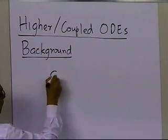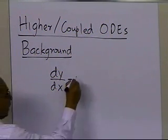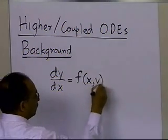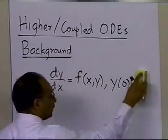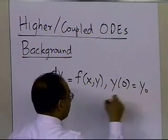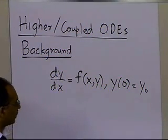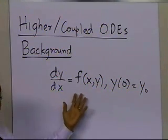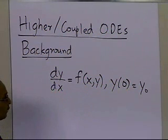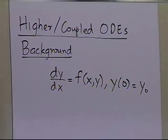All the methods we have talked about — Euler's method, Runge-Kutta second order method, Runge-Kutta fourth order method — we are only able to solve differential equations that are first order and can be written in a specific form with a given initial condition. The initial value is not necessarily zero; it can be any number. So does that mean we are relegated to solving only first-order ODEs? What happens if we have coupled or higher-order ordinary differential equations?